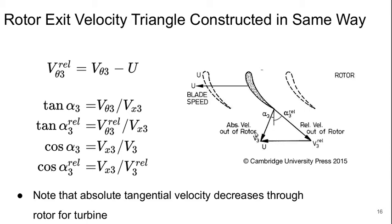So we are able to construct our vector triangle, and we can see from this that in general the tangential velocity is going to be v theta 3 minus u, and we can get the angles the same way.